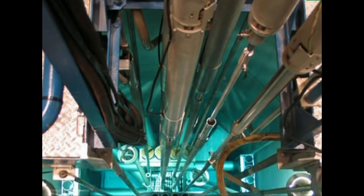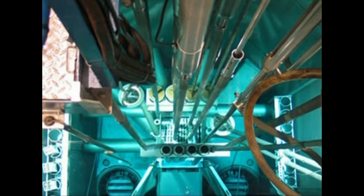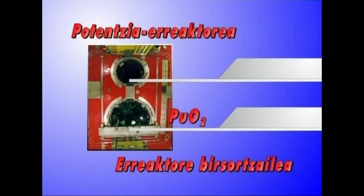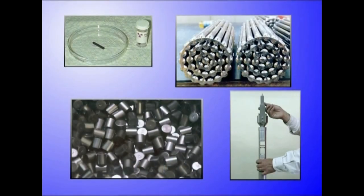Material fisionagarriak dituen eta erreaktore nuklearrean fisiozko kate erreakzioak izan ditzakeen materiala da erregai nuklearra. Erreaktore nuklearrak bi eratakoak izan daitezke: potentzia erreaktoreak eta erreaktore bir-sortzaileak. Potentzia erreaktoreetan erregai erabilienak uranio naturala, uranio oxido naturala eta aberastua, eta uranio karburo aberastua dira. Erreaktore bir-sortzaileetan plutonio oxido erabiltzen da. Erregai nuklearra pastila edo barra formako pusketan fabrikatzen da.